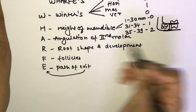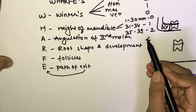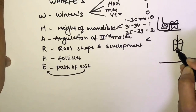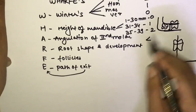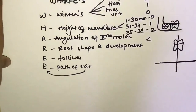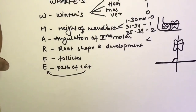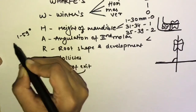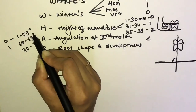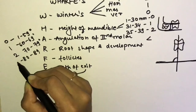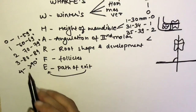Angulation of the second molar: the angle is made by the long axis of the second molar to a horizontal line drawn parallel to the lower edge of the OPG image. Scoring: 1–59° = 0, 60–69° = 1, 70–79° = 2, 80–89° = 3, more than 90° = 4 (most difficult to remove).